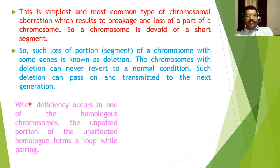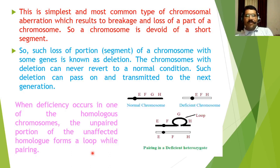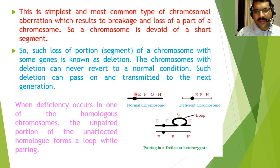When deficiency occurs in one of the homologous chromosomes, the unpaired portion of the unaffected homolog forms a loop while pairing. Sometimes deletion may occur in both homologous chromosomes, but if this deficiency or deletion occurs in only one homologous chromosome, then the other chromosome will form a loop during pairing.